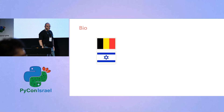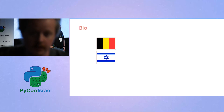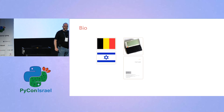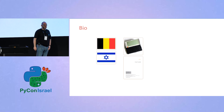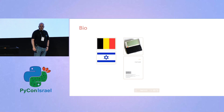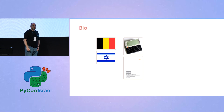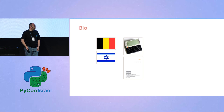A few interesting tidbits about me. I was born in Belgium, grew up there, and after high school I moved to Israel. I started programming with a little device called the Psyon 5, which I got as a gift as a teenager. It later became the basis of Symbian OS and Nokia. The Psyon 5 came with an OPL user guide — OPL is a now-defunct programming language — and I basically read it cover to cover. That's how I learned to program.